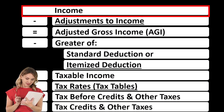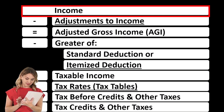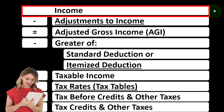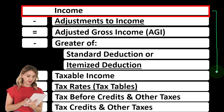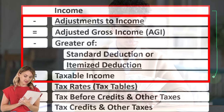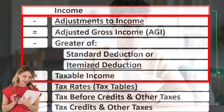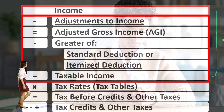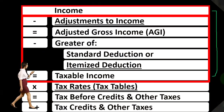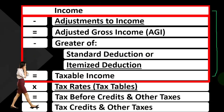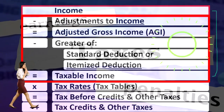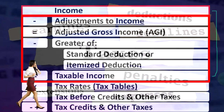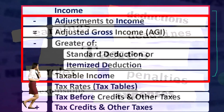Looking at our income tax formula, we are once again focused on line one, that being income. The first half of the income tax equation is in essence a strange income statement where we have income minus the equivalent of expenses — those being the deductions — which gets us to the equivalent of net income, in this case taxable income. Our objective is the opposite of the normal objective: we want the bottom line taxable income to be as low as possible.